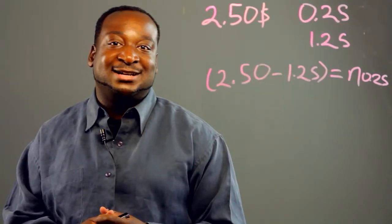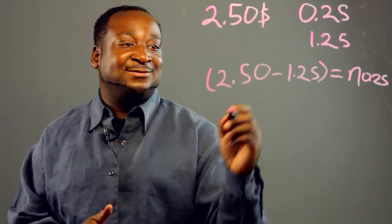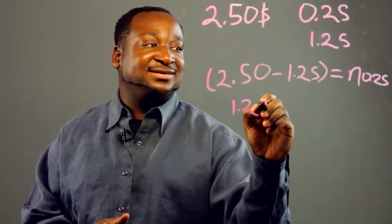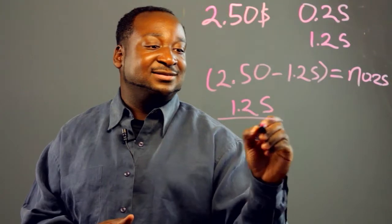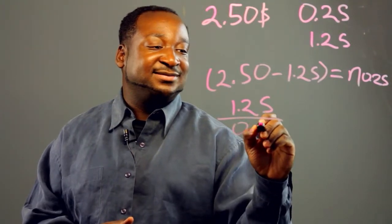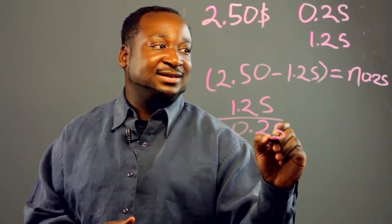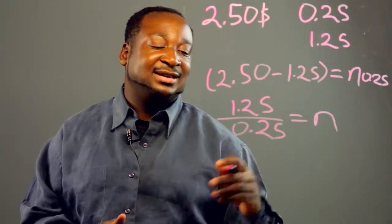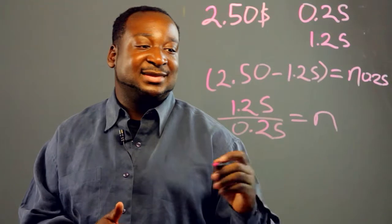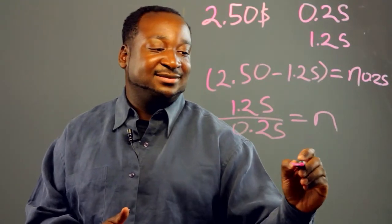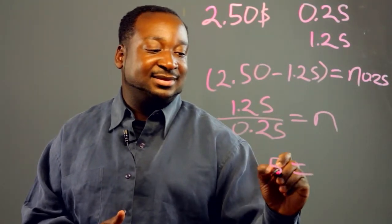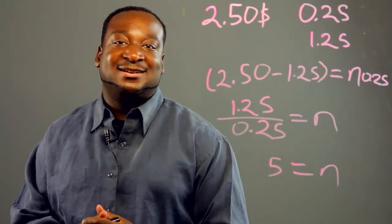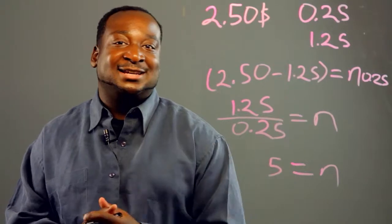And there's our algebraic equation. When we solve that we get 1.25 over 0.25 equals n. So therefore, n is equivalent to 5. So there we have it — he can get 5 pieces of candy.